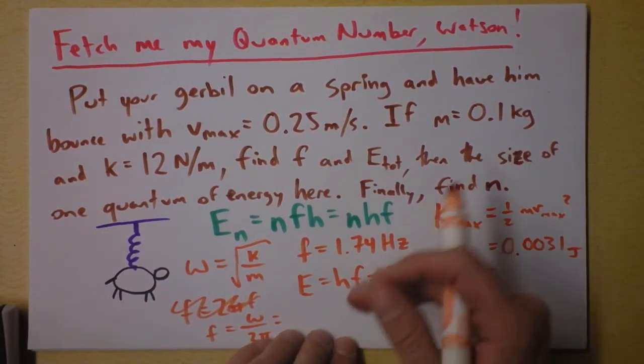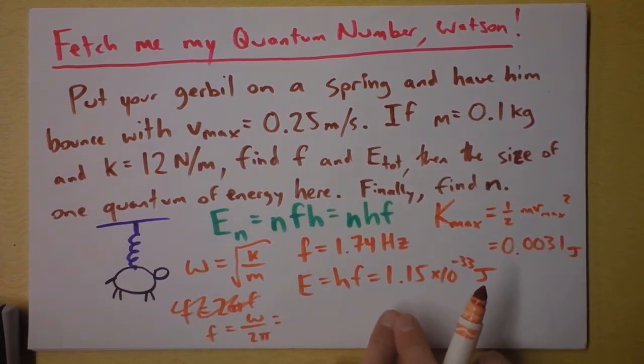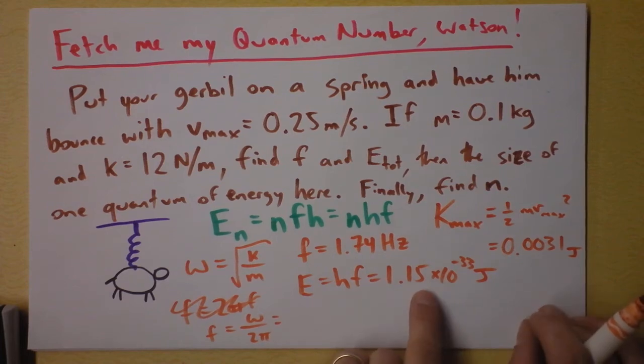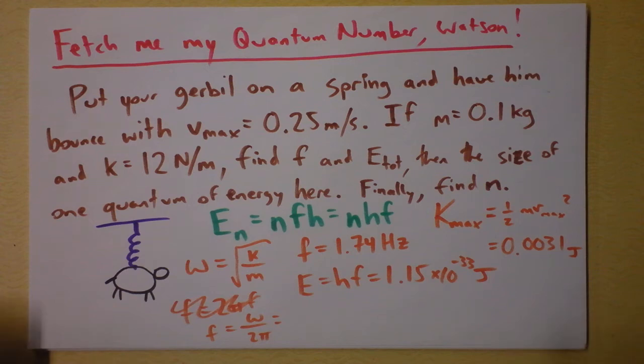Planck's constant is joules seconds, and I'm dividing those by seconds so I get energy units of joules. So that's the energy of a single quantum of this oscillation. And that's the discreteness of the shaking of the gerbil. If I want to push him faster, I have to push him faster such that he gets at least this much energy. Or rather, let me be more careful, he has to get some multiple of exactly this much energy in order for him to go faster. That's very interesting.